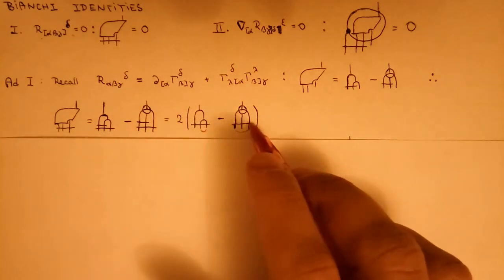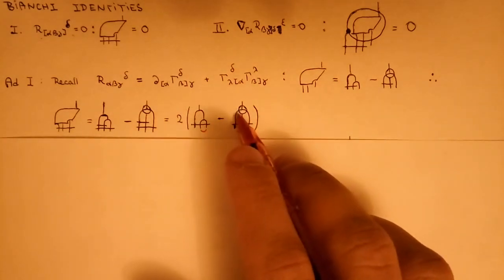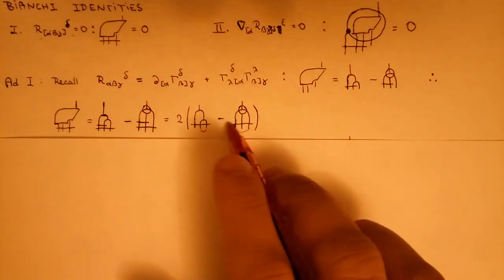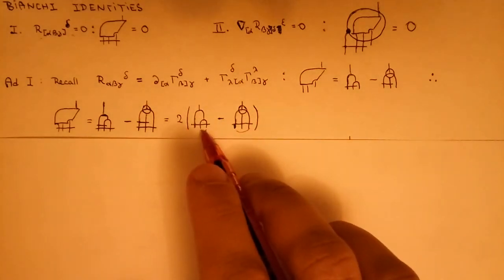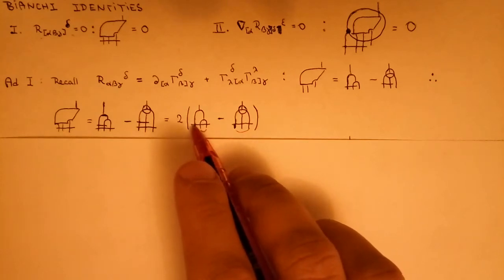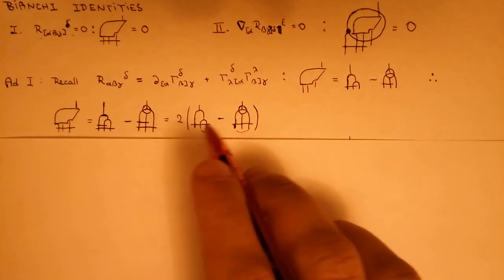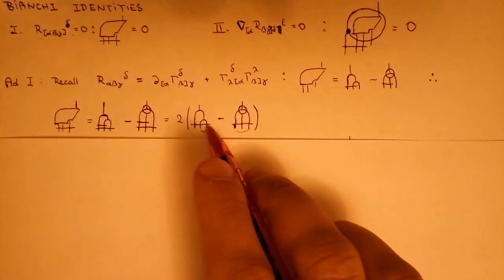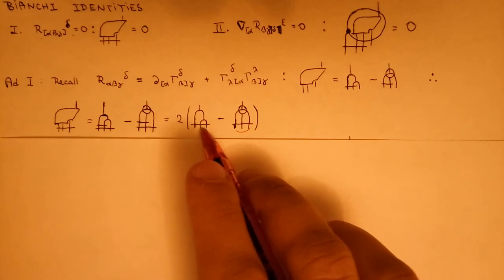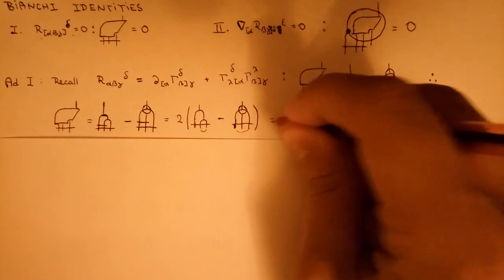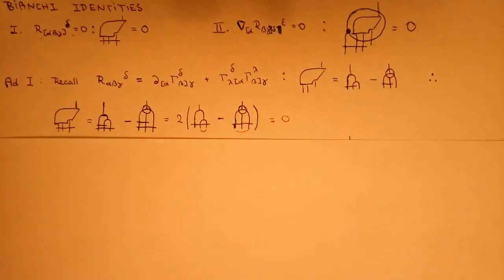The procedure is backwards: you just move this bar out, and there is two times this, so you can create another bar over there. But this bar will cancel this, because this is symmetric — this is the Christoffel symbol with no torsion, so this is zero. And also this: if you move that bar between the first and the third index, this is also zero due to symmetry. If you have a symmetric tensor and you anti-symmetrize it, you get zero. So this is zero — this is the proof of the first Bianchi identity.